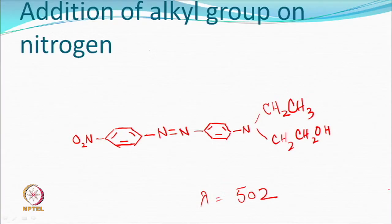That is what an organic chemist works on — making a new molecule, adding something, using some of these principles. For example, the same thing, instead of NH2, you have a group like an alkyl — CH2CH3 or CH2CH2OH — also added, and the wavelength (lambda max) will also start changing.